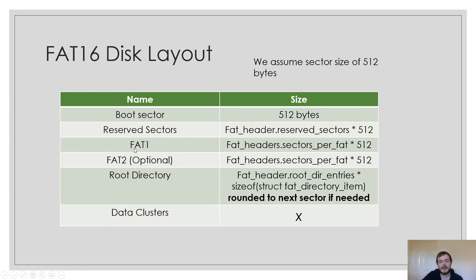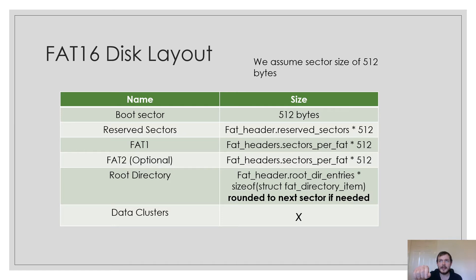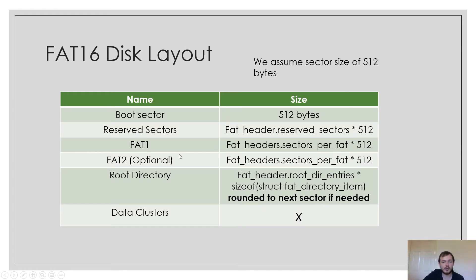After the reserved sectors we have FAT1. FAT stands for file allocation table. The FAT stores information explaining which part of the disk is free, which is used, and which is inaccessible. It also allows you to chain clusters together. For example, if you have a file that's two clusters in size, then in the file allocation table you'll have two bytes representing a cluster, and the value of those bytes will be the number of the next cluster of that file. FAT2 is optional — it's essentially a duplicate of FAT1 used as a backup for data corruption.